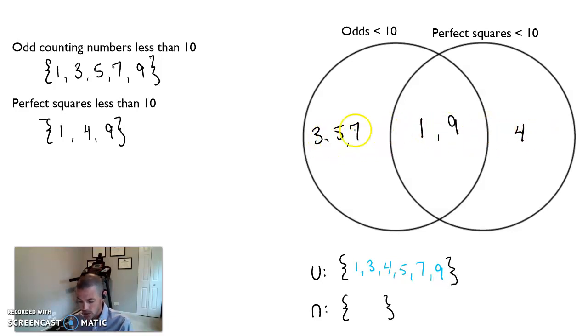Those are the terms that appear in here. Even though one and nine appear twice up here, it doesn't get listed twice in the union. And then lastly, the intersection here is one and nine. Excellent.